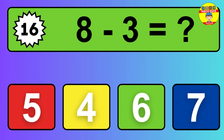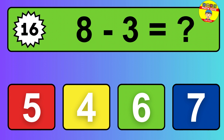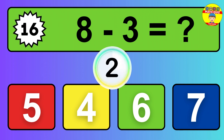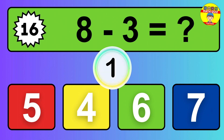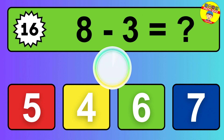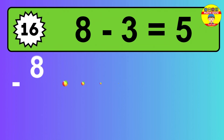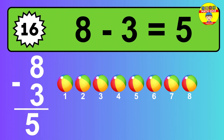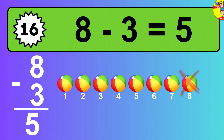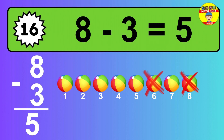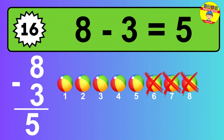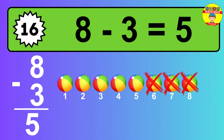Question 16. 8 minus 3 equals what? The answer is 8 minus 3 is 5. Let's count it. 1, 2, 3, 4, 5.